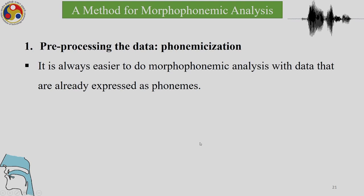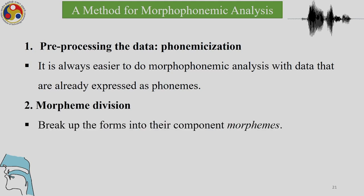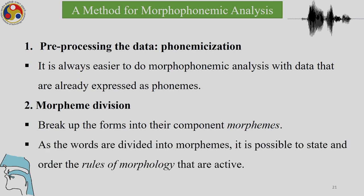Like any analysis, here also we have to do some pre-processing. It is always easier to do morpheme analysis with data already expressed as phonemes. We have to make morpheme cuts and break up the forms into their component morphemes — not just the phonemes. As the words are divided into morphemes, it is possible to state and order the rules of morphology that are active.